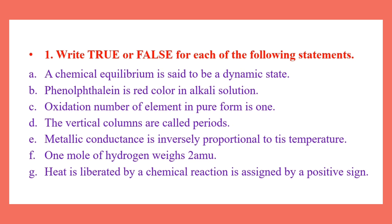Number F: One mole of hydrogen weighs 2 AMU. False — one mole of hydrogen weighs 2 grams. Number G: Heat liberated in a biochemical reaction is assigned by a positive sign. False — heat liberated has a negative sign.